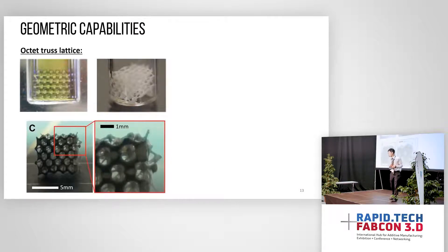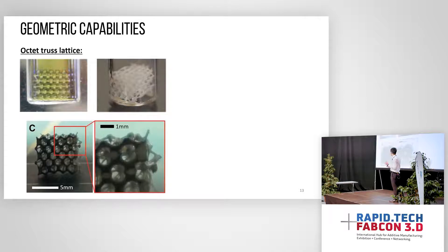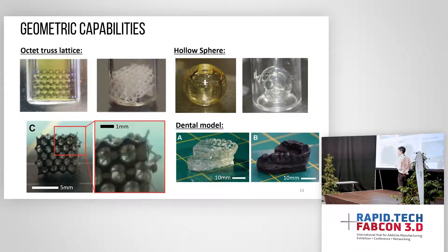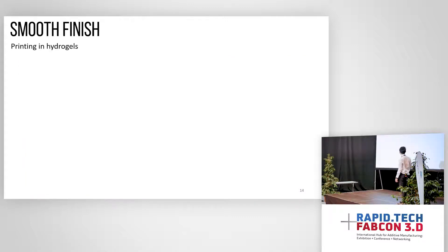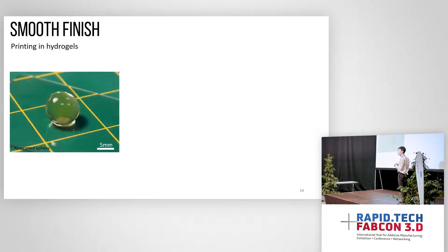What are the geometrical capabilities? Almost limitless. We tried printing all test structures, which are fairly compact, and we have feature sizes down to 300 microns (0.3 mm). We also tried printing hollow structures and organic dental models. Another advantage is that you can achieve a really smooth finish — if you print a sphere in hydrogel it is optically smooth, so in the future we can use this technology to print optics.